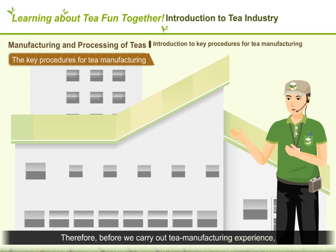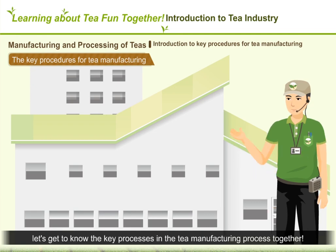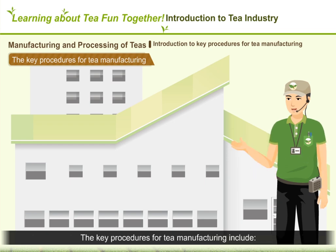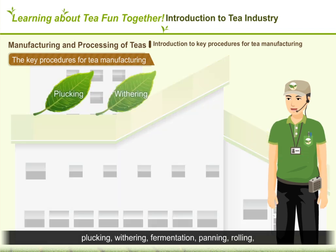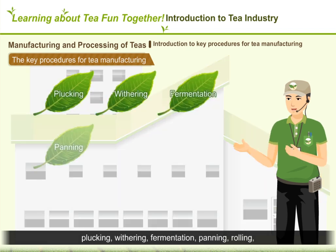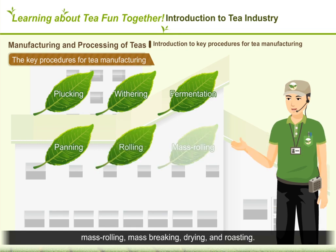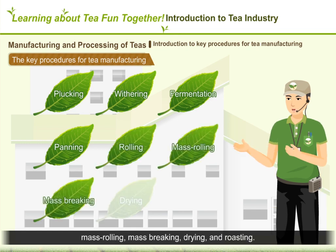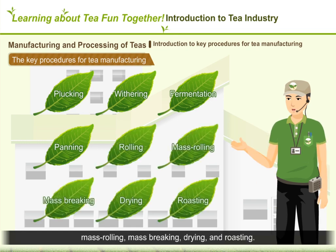Before we carry out the tea manufacturing experience, let's get to know the key processes in the tea manufacturing process together. The key procedures for tea manufacturing include plucking, withering, fermentation, panning, rolling, mass rolling, mass breaking, and drying and roasting.